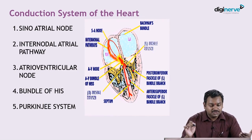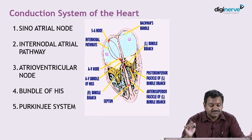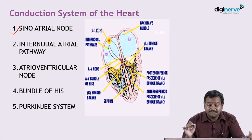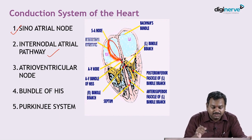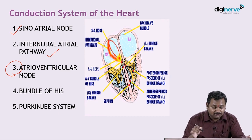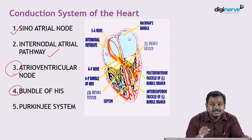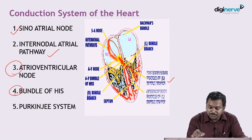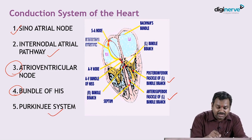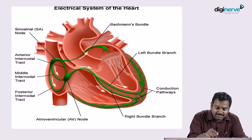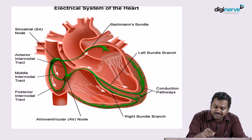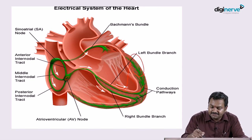The conduction system of the heart is made up of the following conduction pathways. The most important is the sinoatrial node — that's the pacemaker of the heart — followed by the internodal pathways. We have three internodal pathways which connect the SA node to the AV node. Next, we have the AV node (atrioventricular node), followed by the Bundle of His, from where the right bundle and the left bundle arise. The left bundle further divides into the posterior fascicle and anterior fascicle, and lastly we have the Purkinje system which innervates the muscle of the left ventricle and produces the various impulses.